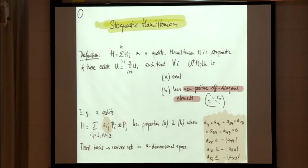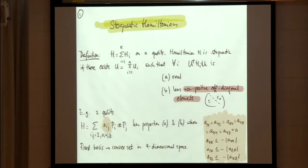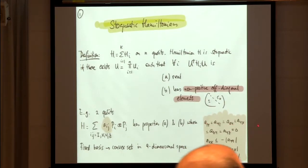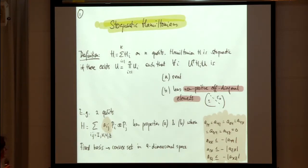For a two-qubit Hamiltonian, I have a sum over terms with all the Paulis — identity, X, Y, and Z — with some coefficients a_ij. It's very easy to see that Hamiltonian has properties A and B when there are no Y-components — actually, no identity-Y and XY components. YY is of course allowed because that's a real component. If I fix the basis, these are the conditions for two qubits.